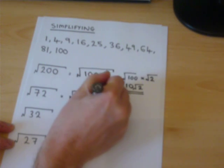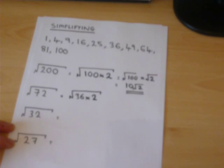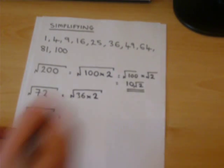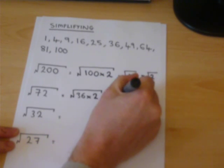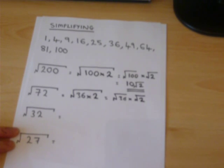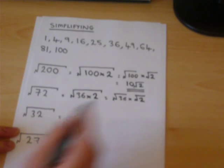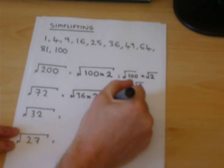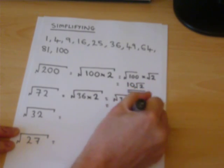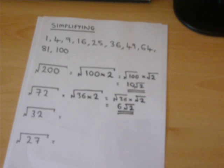It is square root of 36 times 2. We do the same principle as before. And this part can be worked out, because it was a square number. This equals 6 root 2. And that is the answer.